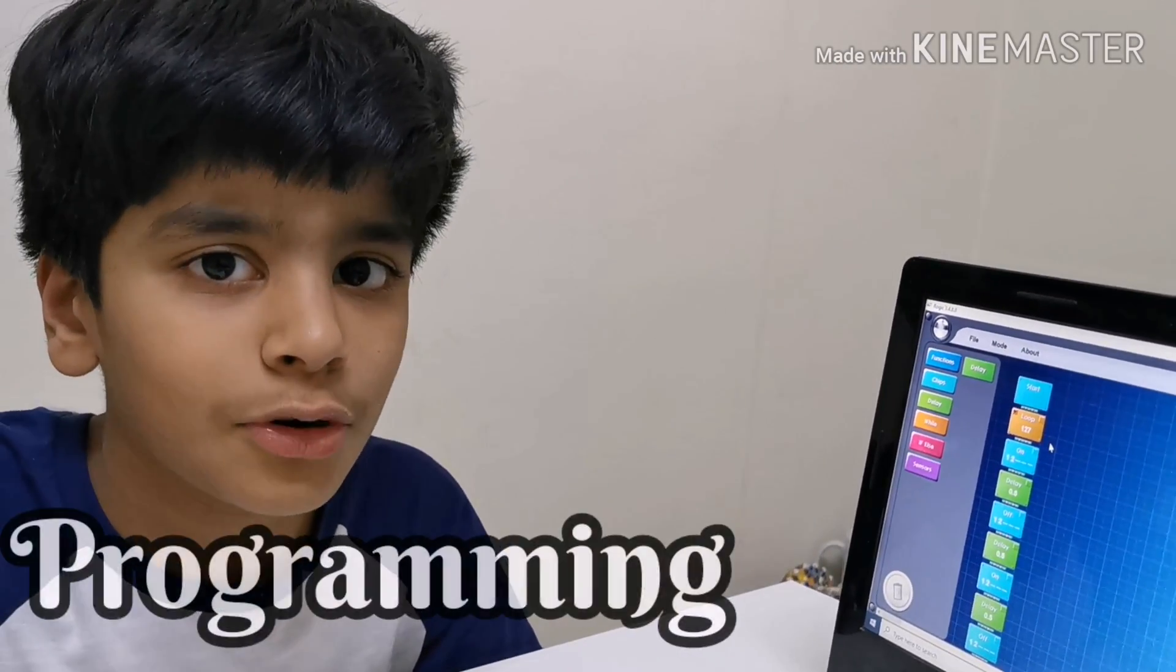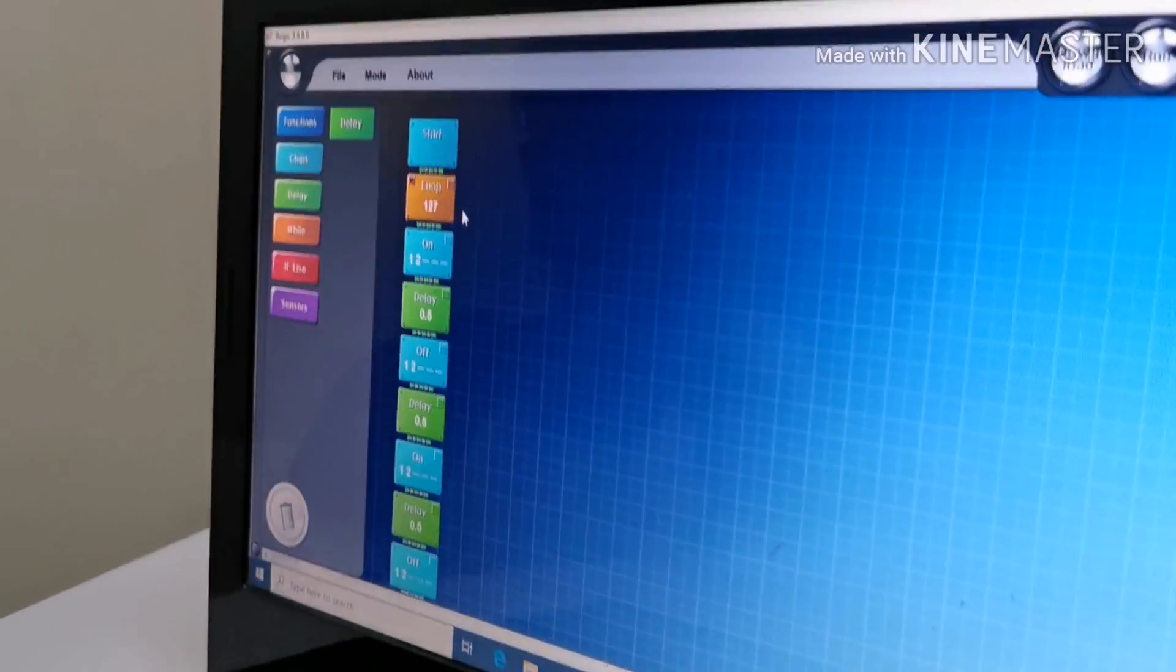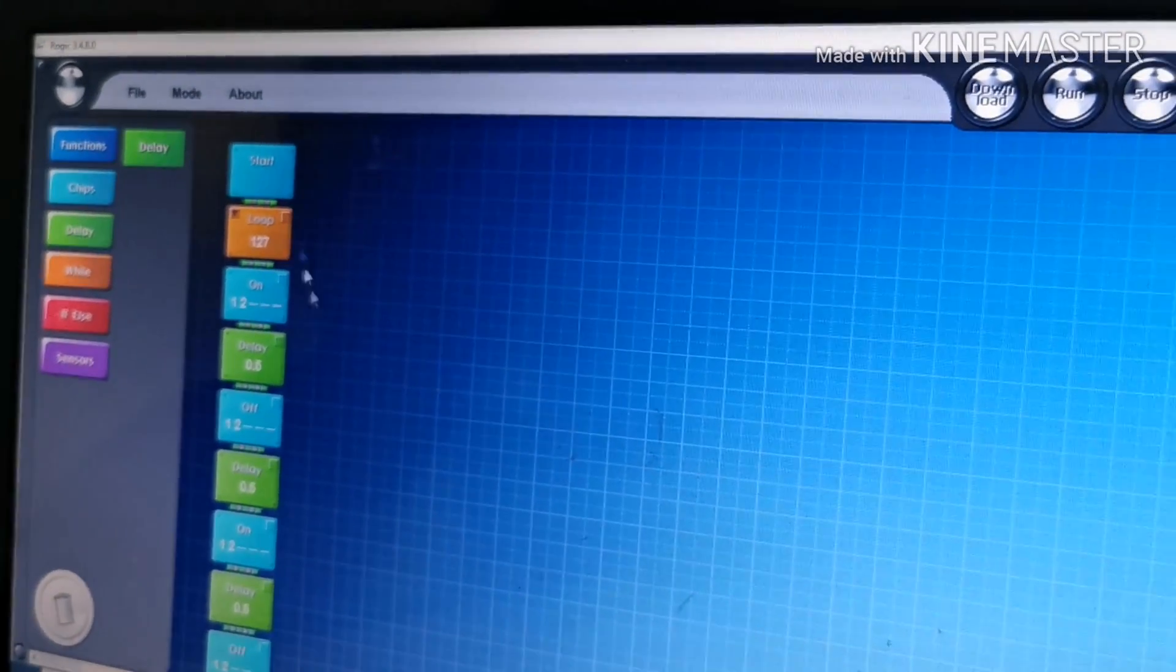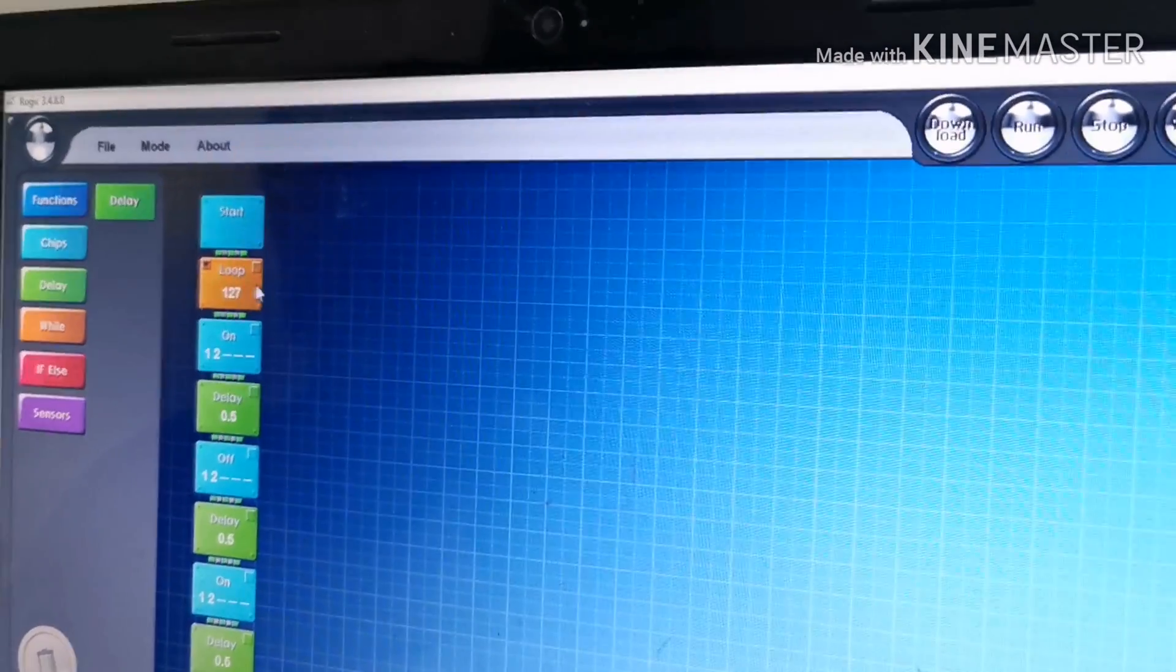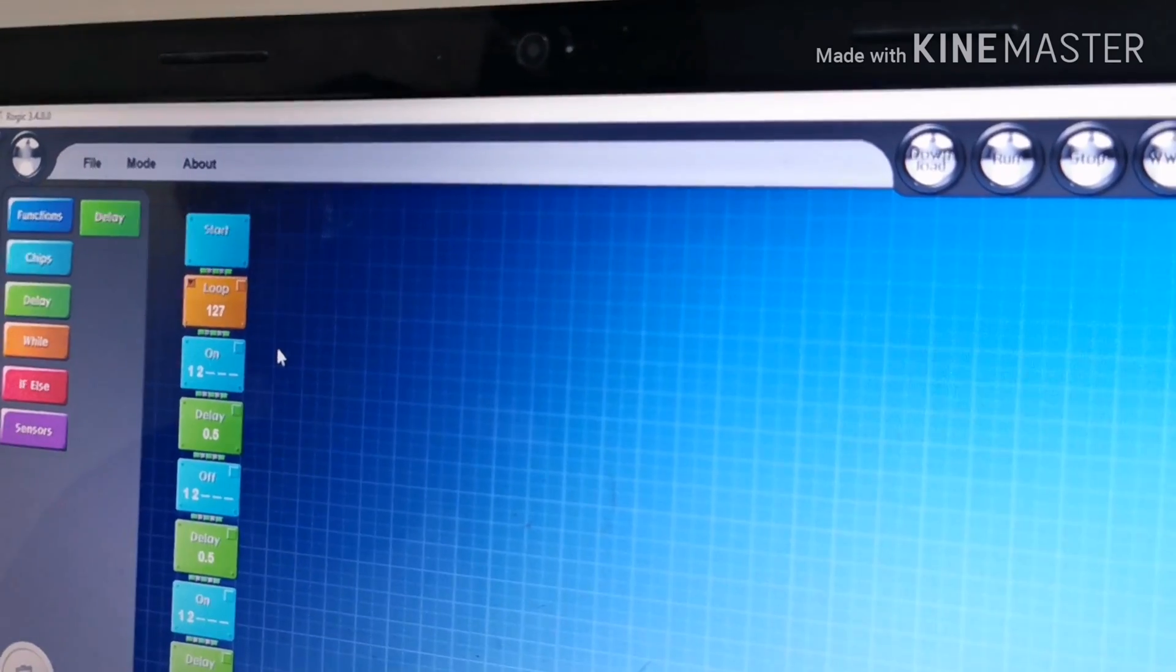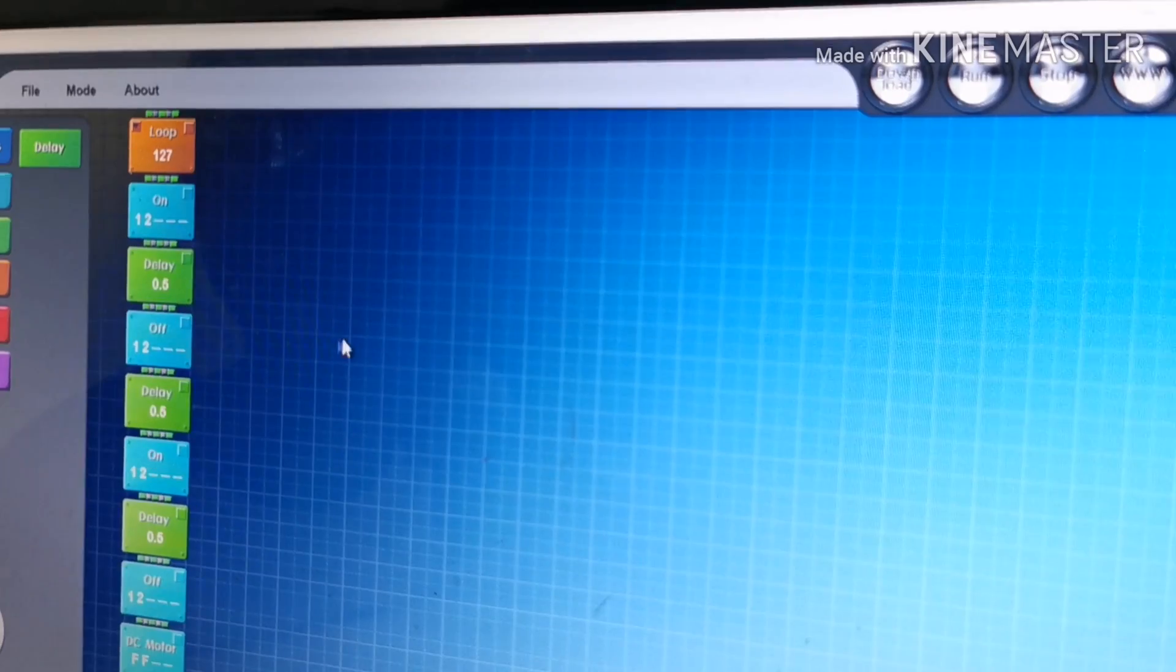Now it's time for the programming. I have already created a program here, and I'm going to explain it to you what it does. Now I have kept a loop here. I will repeat it 127 times. And here I'll turn on port one and two. This is the LED lights.